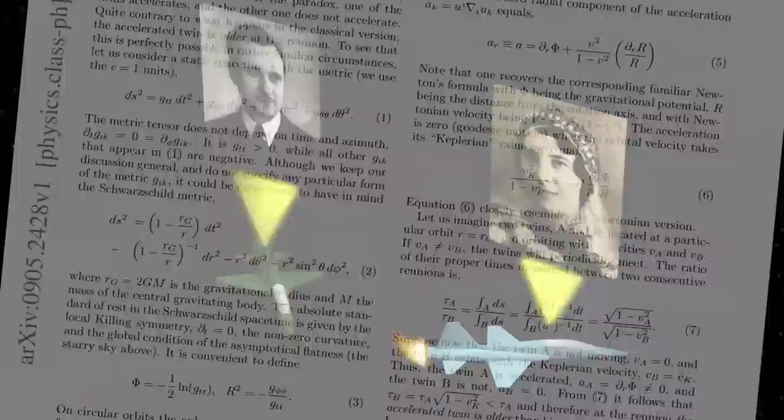The authors of this paper then ask, if we run this same scenario again, who will be the older twin? After churning through the math, they discover the result is that the orbiting twin, Bob, will be younger than his sibling.